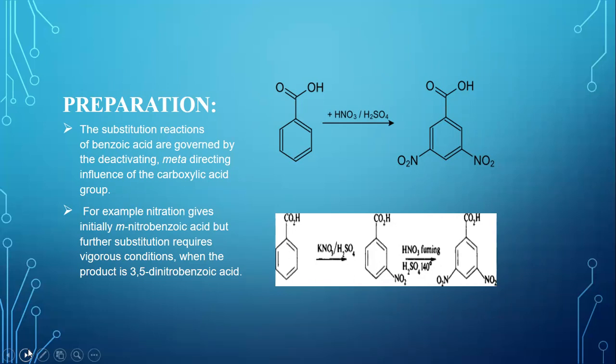In nitration process, the nitro group is introduced into the organic compound. As you can see that benzoic acids in the presence of potassium nitrate and sulfuric acid forms meta-nitrobenzoic acid.